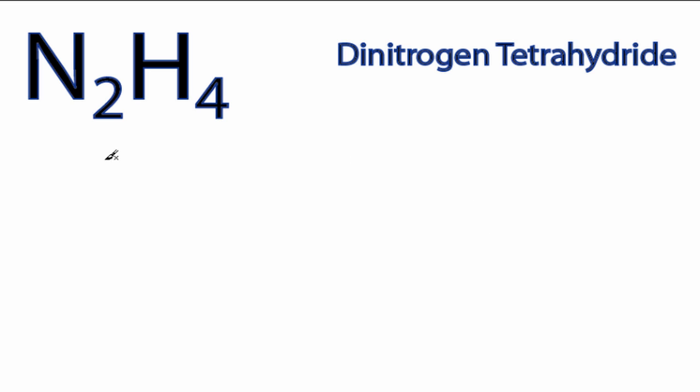Let's do the N2H4 Lewis Structure. Nitrogen has 5 valence electrons. We have 2 Nitrogens, plus Hydrogen has 1 valence electron. We have 4 of them. So 10 plus 4, we have a total of 14 valence electrons.